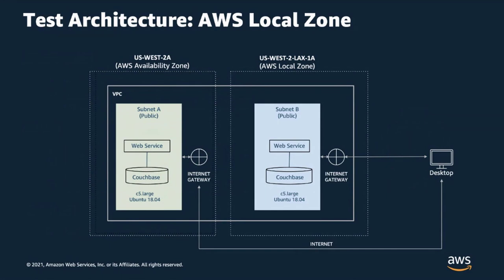We used the availability zone US West 2A and the AWS Local Zone US West 2 LAX 1A. Both were set up in an identical manner with Couchbase running in each zone and the web service running in that same zone. We then used a desktop that accessed both web services over a wired ISP in parallel, capturing all the metrics described.